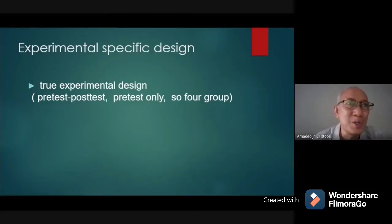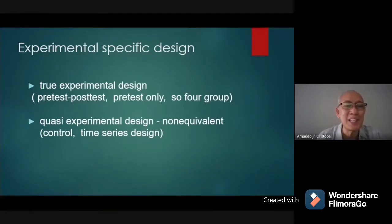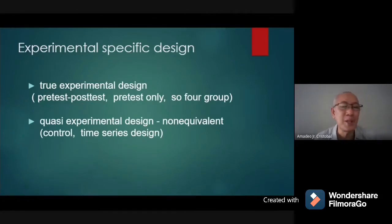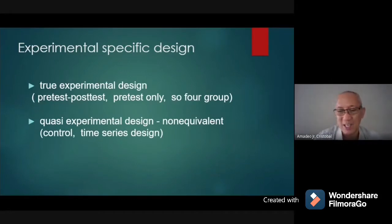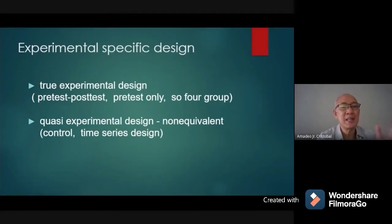The four-group design is the best specific design for true experimental, but it requires more effort, more knowledge, and is more complicated to conduct. Next, we have the quasi-experimental design. Quasi-experimental design can be done without random selection — you can use a non-scientific method of choosing your respondents. It is also non-equivalent, meaning one group could have 15 participants and another only 10, unlike true experimental where each group has a similar number.